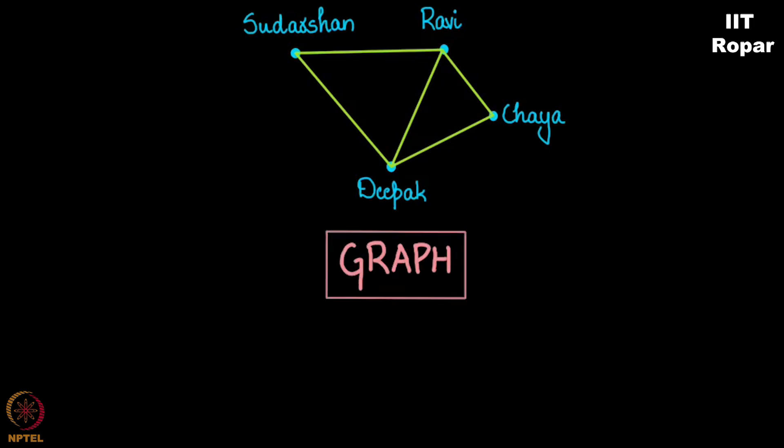A graph with nodes represented by V. Let me write that down. Let me simply write S for Sudarshan, R for Ravi, C for Chaya, and D for Deepak.